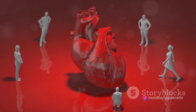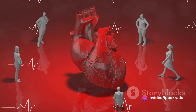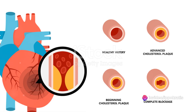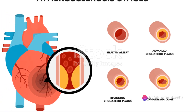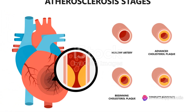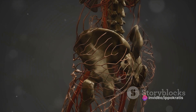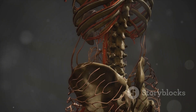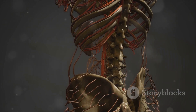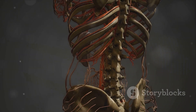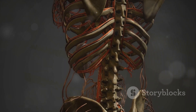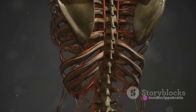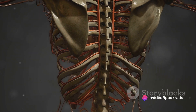Coronary disease is a result of the narrowing or blockage of the coronary arteries. These crucial vessels supply the heart with blood, energy, and nutrients. The accumulation of atheromatous plaque in the walls of the coronary arteries restricts blood flow to the heart, causing symptoms like chest pain and shortness of breath.